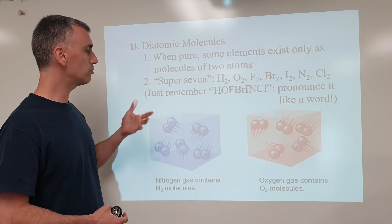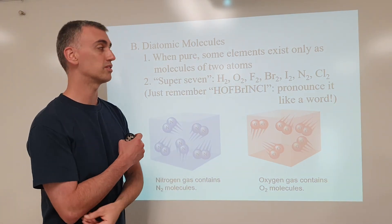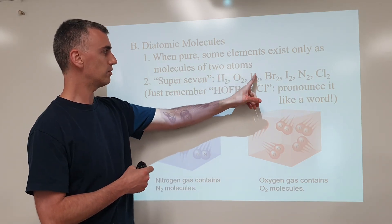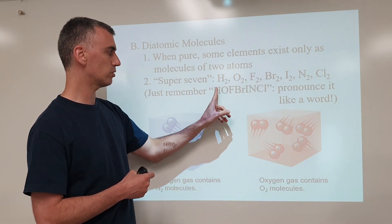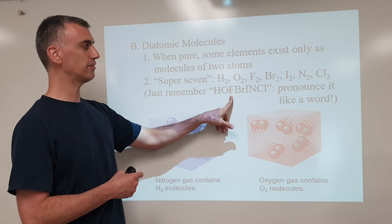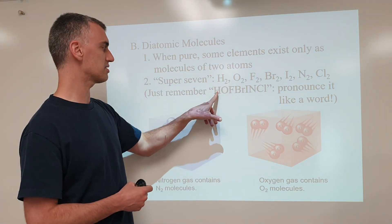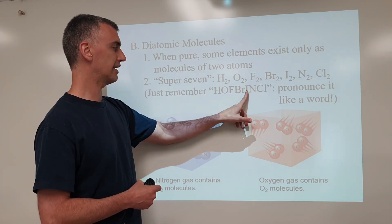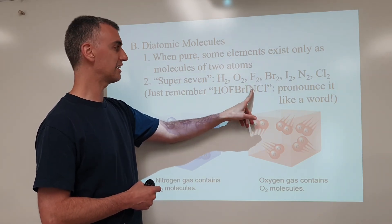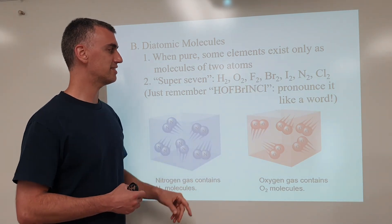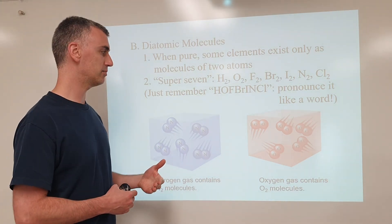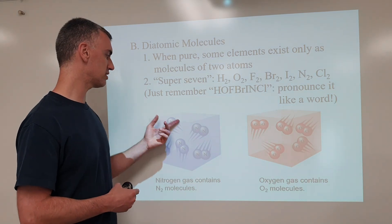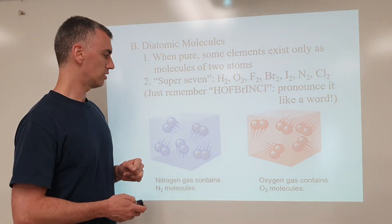So keeping that in mind, how do you remember these? Because yes, you do need to remember which ones are your diatomic elements. Well, if you put them all in order, you can make a word, Hoffbrinkel. And if you remember Hoffbrinkel, then you know the elements, because Hoffbrinkel tells you hydrogen, oxygen, fluorine, bromine, iodine, nitrogen, and chlorine. And this helps you remember what the diatomic elements are. Because again, these are the elements which, when pure, exist only as molecules of two.